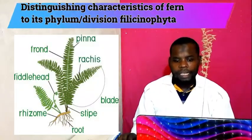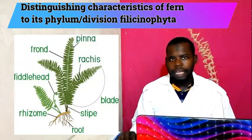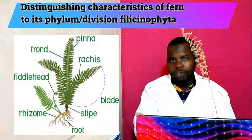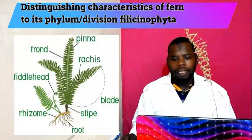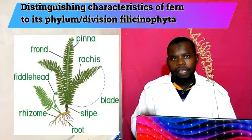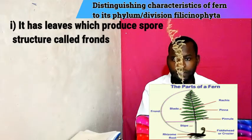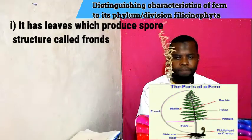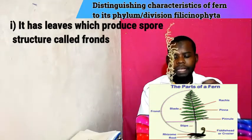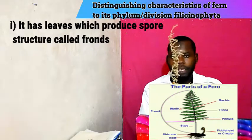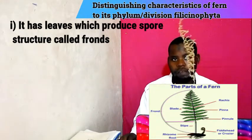The distinguishing characteristics of Fern Plant to its phylum Filicnophyta — or why a Fern Plant belongs to Filicnophyta. The first reason is because it has leaves which produce spores, a structure called the sorus. When you have a mature Fern Plant, you will see there is a sorus. This sorus produces spores — that is the first feature characteristic belonging to division Filicnophyta.